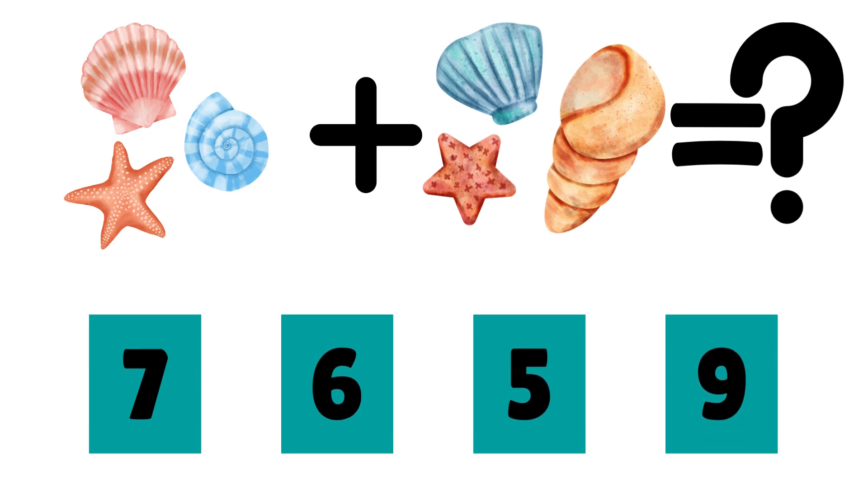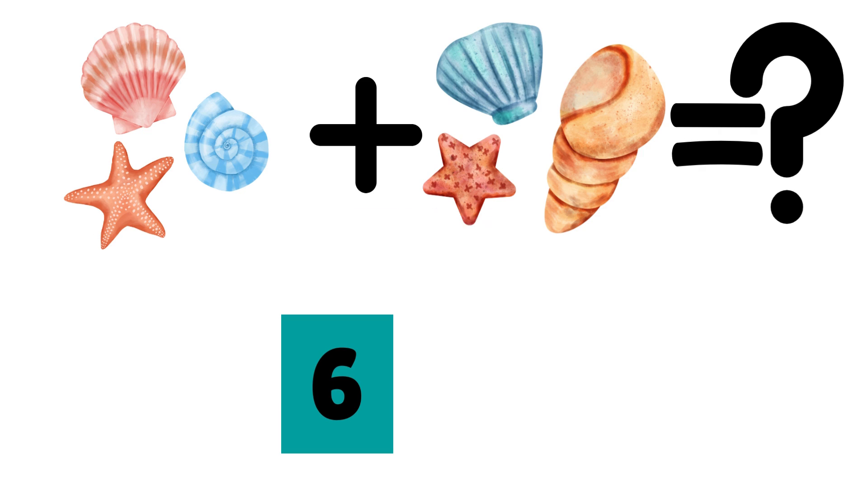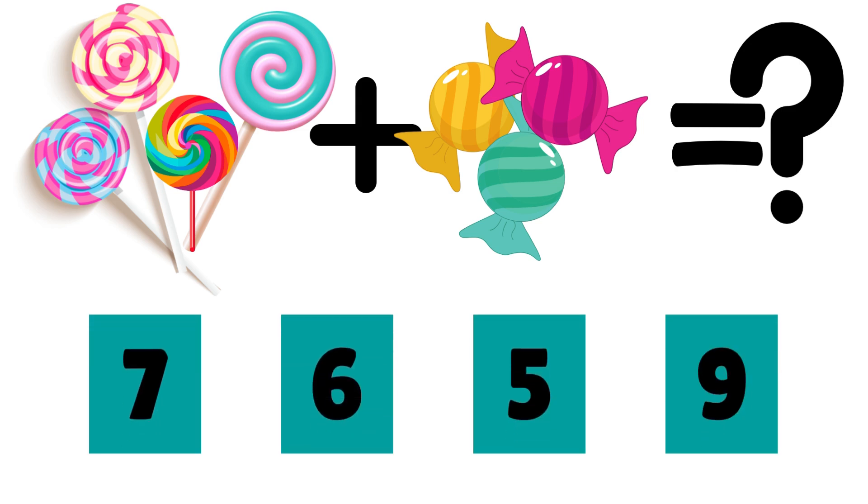There are three shells on the sand and we find three more. How many shells do we have now? The answer is six. Three plus three is equal to six.